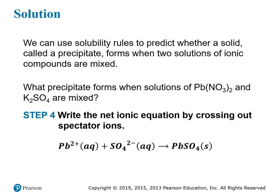The net ionic equation just shows the formation of the precipitate: Pb²⁺ + SO₄²⁻ → PbSO₄(s). This is your answer.